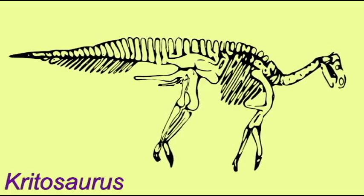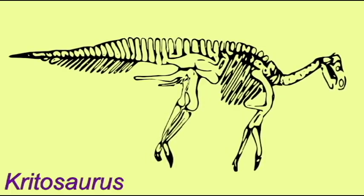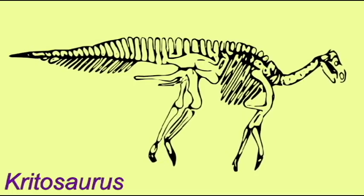The smaller species were probably bipedal, and the larger ones capable of both bipedal and quadrupedal locomotion.